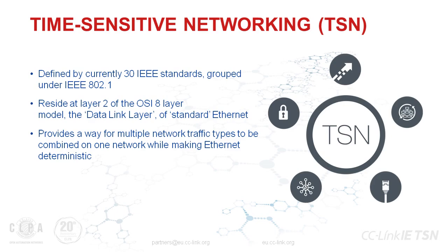Basically, TSN resides at what they call the data link layer of the 8-layer model of Ethernet, which defines how everything works with Ethernet going all the way from the cable or wireless at the bottom — the physical layer — all the way up to the applications that run on top. TSN is mostly concerned with layer 2 of this hierarchy. But the key point is that it provides a way for multiple network traffic types to be combined on one network, while also making the operation of that network deterministic.